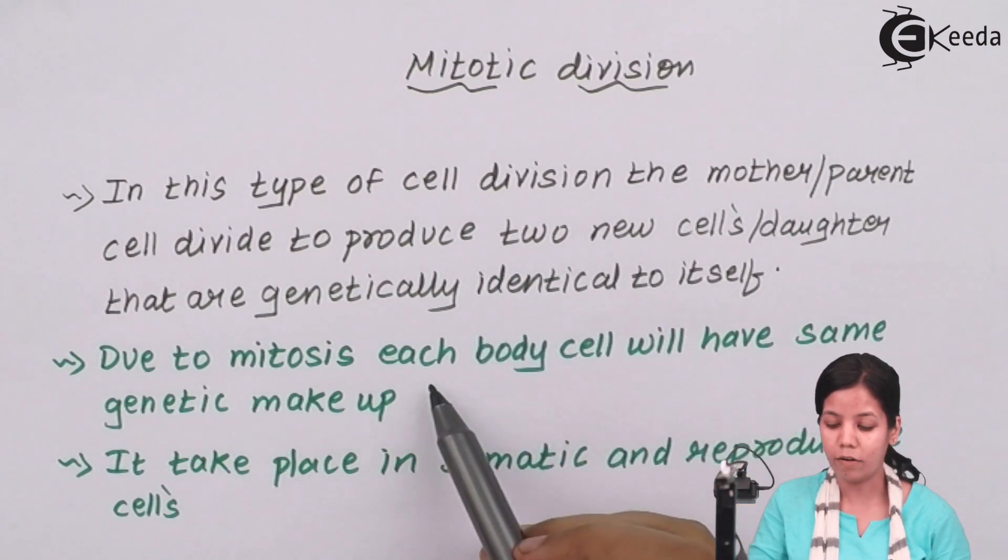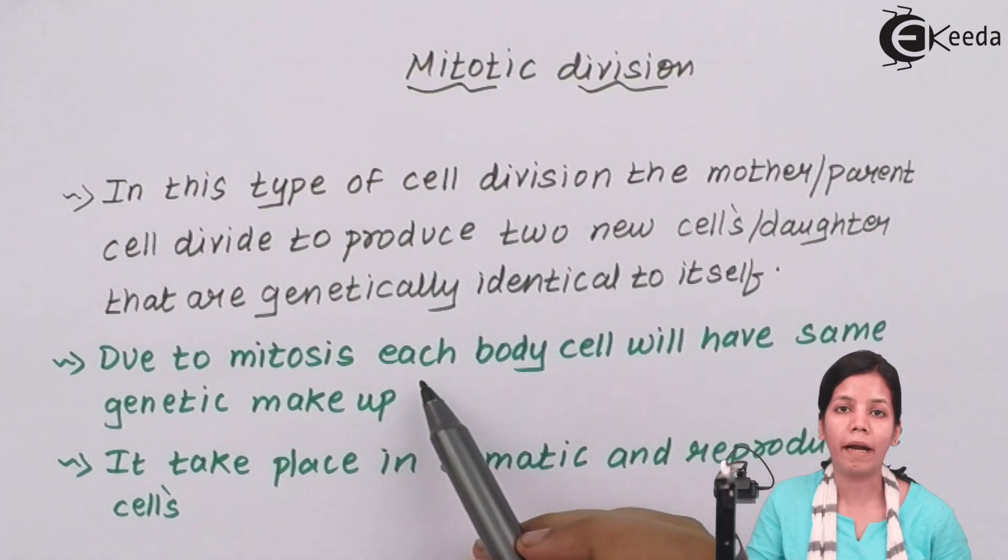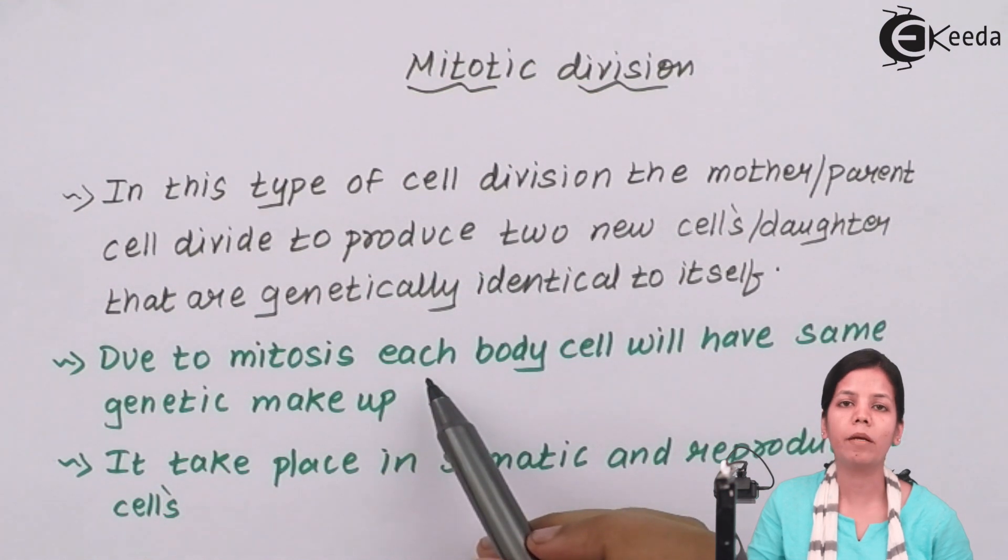During mitosis, each body cell will have the same genetic makeup. Mitosis makes it happen. The diploidy of the chromosome is maintained during mitosis.